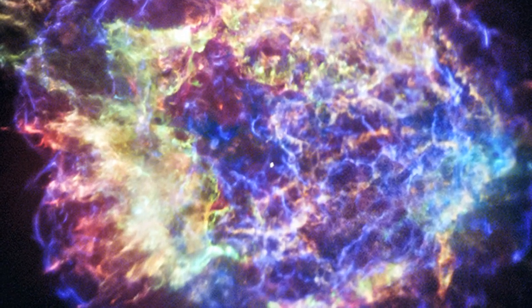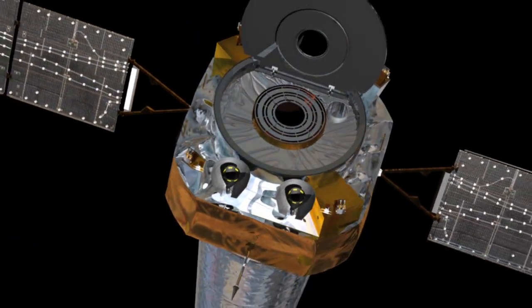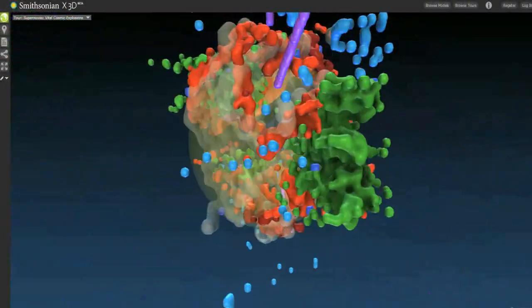One of the most famous objects in the sky, the Cassiopeia A supernova remnant, is now on display like never before, thanks to NASA's Chandra X-ray Observatory and a new project from the Smithsonian Institution.